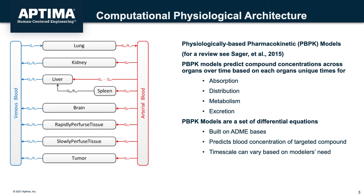The physiological models used in this research are called PBPK, or Physiologically Based Pharmacokinetic Models. They're also known as PBTK, Physiologically Based Toxicokinetic Models. PBPK models account for the absorption, distribution, metabolism, and excretion of synthetic or natural chemical substances in humans and other animals. The diagram shown here gives examples of organs or other tissue represented in the architecture. Importantly, these models can predict the concentration of target compounds in the brain across time.